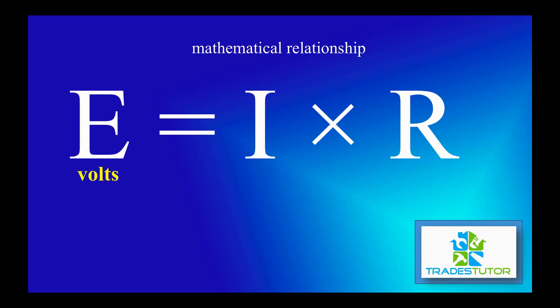E stands for volts, I represents amps, and R represents resistance. Sometimes we measure that in Ohms, and you can see that little symbol that identifies resistance.